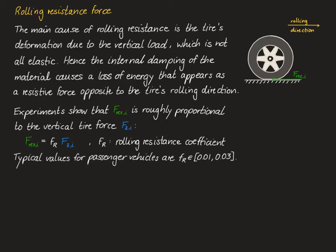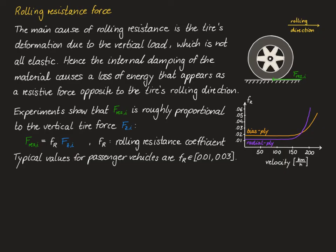Typical values of the rolling resistance coefficient for passenger vehicles are in the interval between 0.01 and 0.03. Looking at rolling resistance in more detail, this proportional relationship is only true in some range of velocity. For velocities well above 100 km/h, the rolling resistance coefficient starts to increase like a fourth-order polynomial. As seen from the diagram, radial ply tires generally have a lower rolling resistance compared to bias ply tires, at least up to a certain velocity.